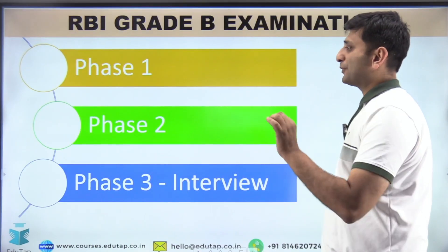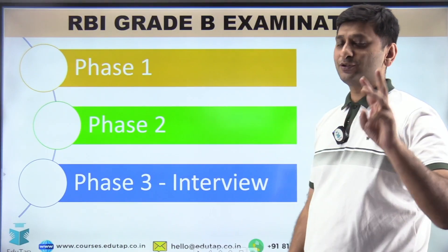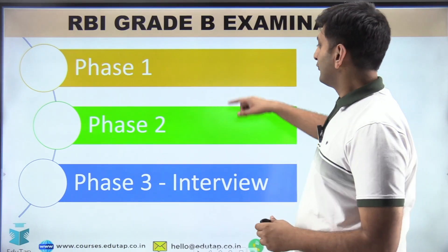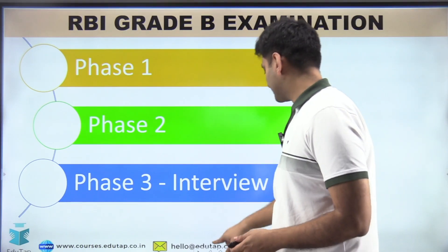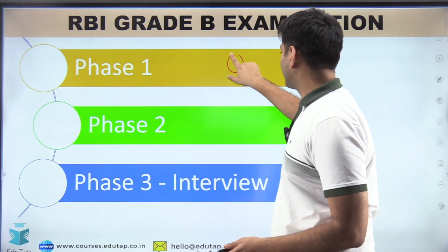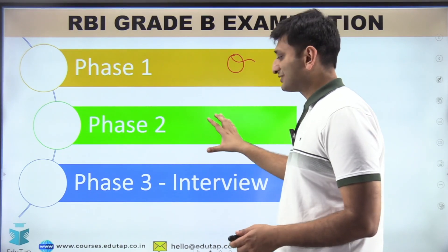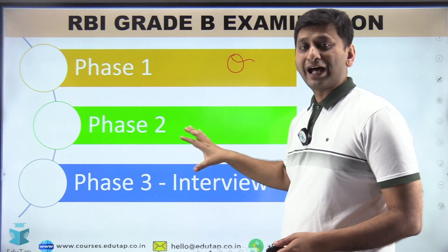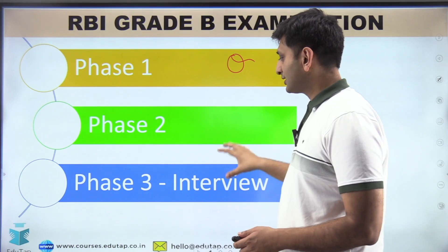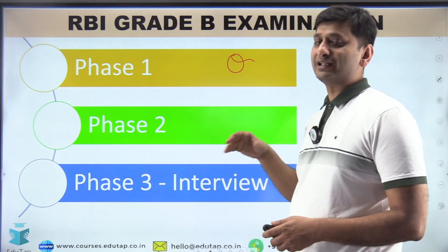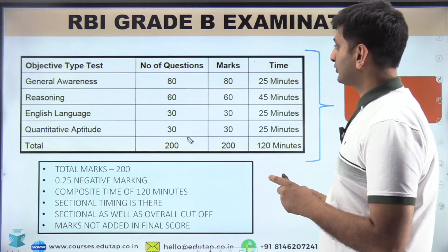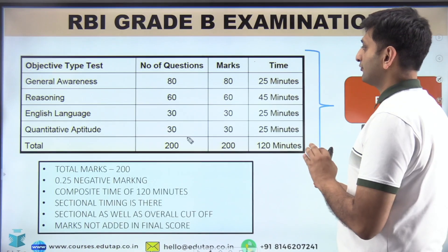Talking about the RBI Grade B exam pattern, the exam is divided into three phases. Phase one is basically qualifying. I'll talk about these phases in detail later. Phase two and phase three are merit-based. Phase two is a written test and phase three is an interview.